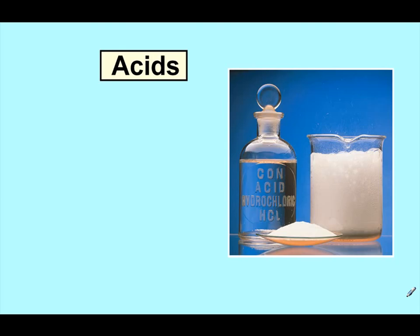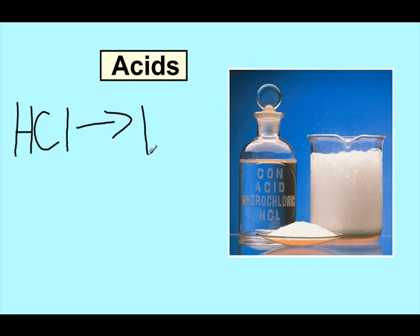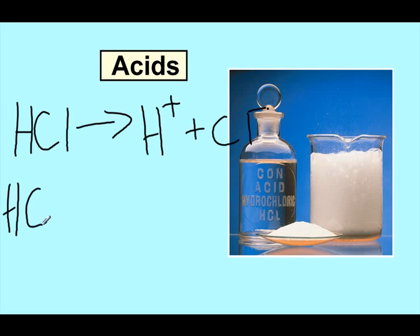Acids are a group of compounds that when in solution will produce hydrogen ions. If we were to look at equations, HCl into water is going to produce hydrogen ion and chloride anion. That's an example of a strong acid because the arrow points towards completion.